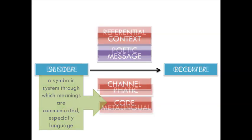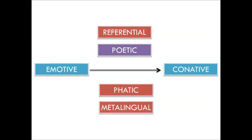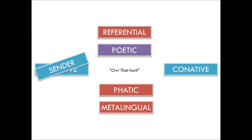According to Jakobson, a message has six functions. Each function is associated with one of these six factors. For example, take a message like, 'Ow! That hurt!' It expresses the internal state of the sender, and so it's an example of the emotive function.